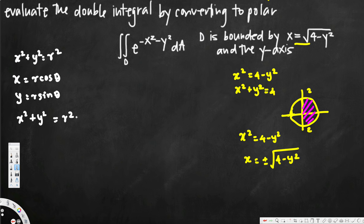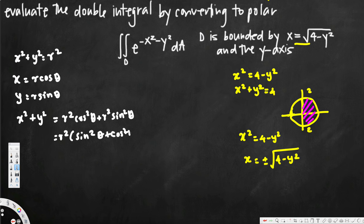So r squared cos squared theta plus r squared sine squared theta — here we can take r squared common, and we will get sine squared theta plus cos squared theta. By the trig identity, we know that sine squared theta plus cos squared theta is equal to 1. Therefore this is going to be equal to r squared.